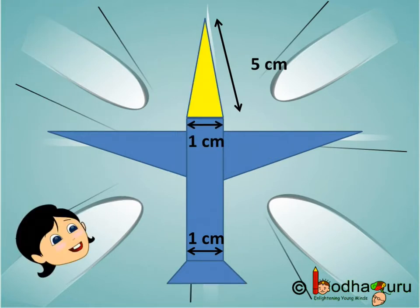This is the first triangle which makes the nose of the aeroplane. The nose is an isosceles triangle having a base equal to 1 cm and the two sides are 5 cm each.